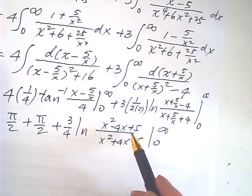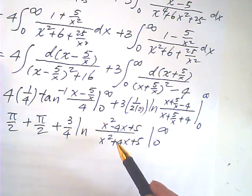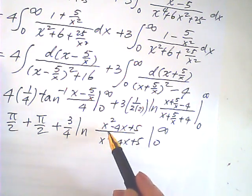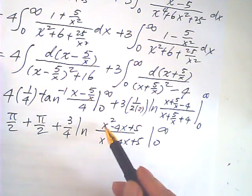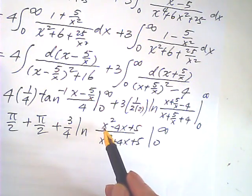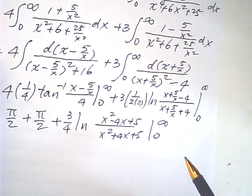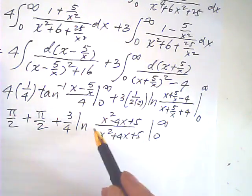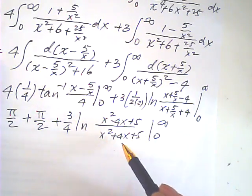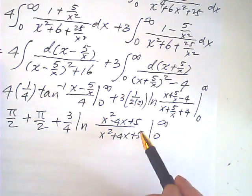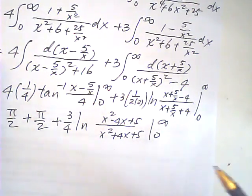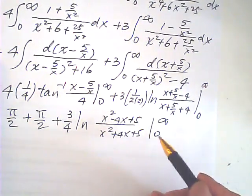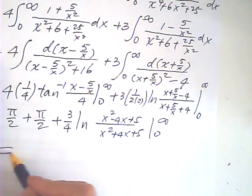Then, as x approaches infinity, this is approaching to 1, because the dominant term is the same. And as x approaches to 0, this is also approaching to 1. Then this is equal to 0. So, this is, the result is π. See? This is 0. So, the answer is π.